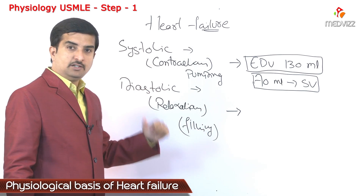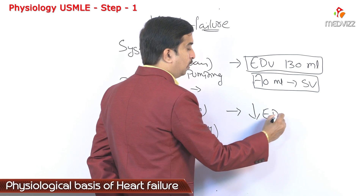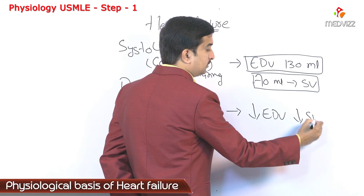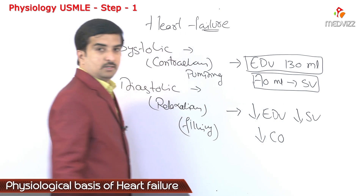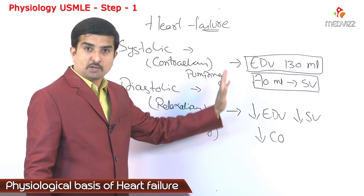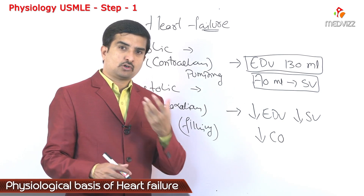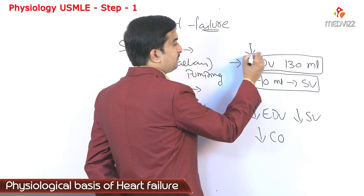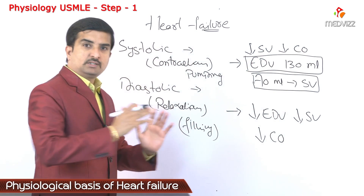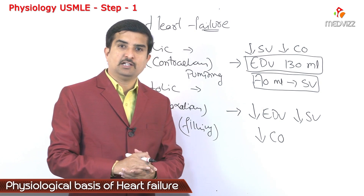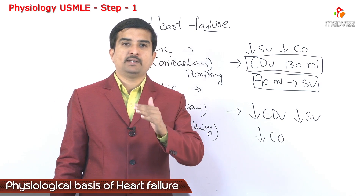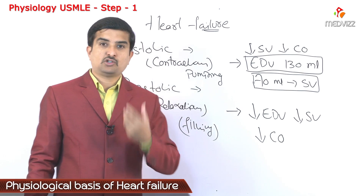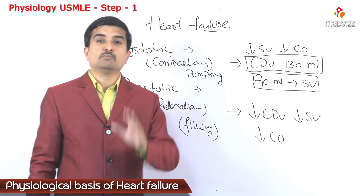In diastolic failure, there is a decrease in end diastolic volume due to impaired filling, leading to a decrease in stroke volume and a decrease in cardiac output. In systolic dysfunction, end diastolic volume is normal, but because the myocardial fibers cannot contract properly, enough blood is not ejected from the left ventricle — also resulting in decreased stroke volume and cardiac output. So in both conditions, cardiac output is predominantly affected. Systolic heart failure is more commonly seen than diastolic heart failure.